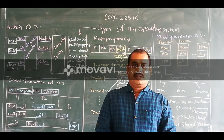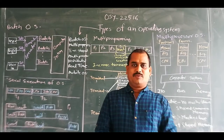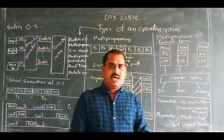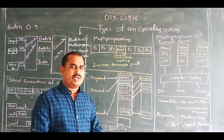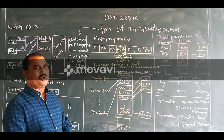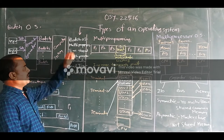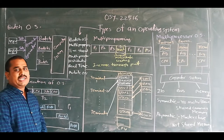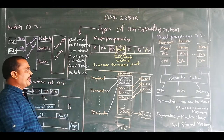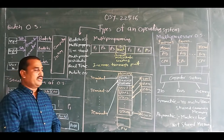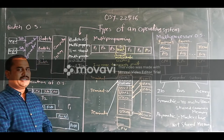So let's start the concept of types of an operating system. There are many types included in the operating system, but we have covered only those which are included in our syllabus contents. In our syllabus: batch operating system, multi-programming operating system, time-share operating system, multi-processor operating system, distributed operating system, real-time operating system, and then mobile operating system, also called as an Android operating system.